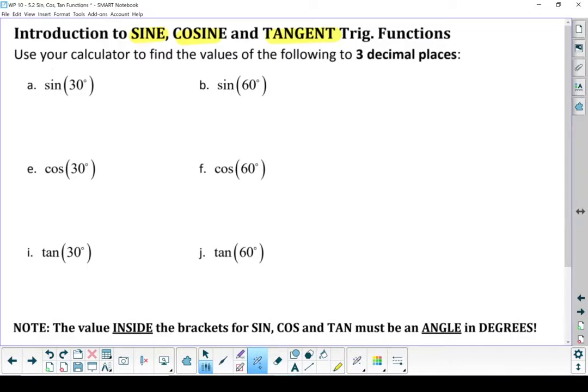So we never have a sine or a cos all by itself. It's always the sine of something. It's always the cos of something. It's always the tangent of something.